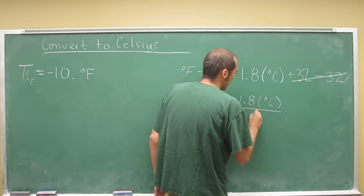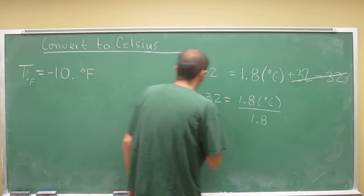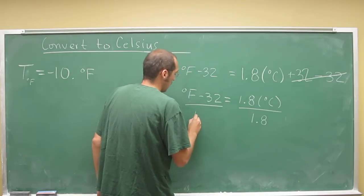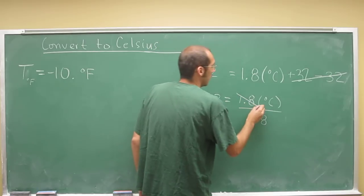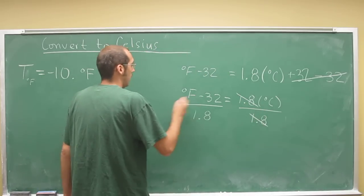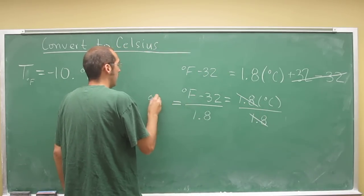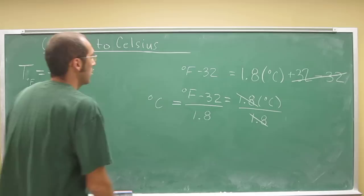We've got to divide both sides by 1.8. When we do that, cancel, cancel. And of course, that is now isolated degrees Celsius.